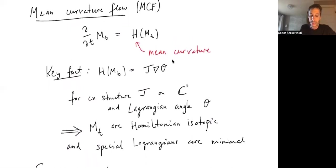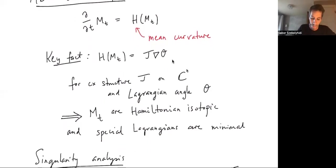Moreover, the stationary points to the static solutions of this flow, which are just the minimal submanifolds, they are exactly the same as when ∇θ is zero, i.e. θ is constant. So special Lagrangians are the stationary points.